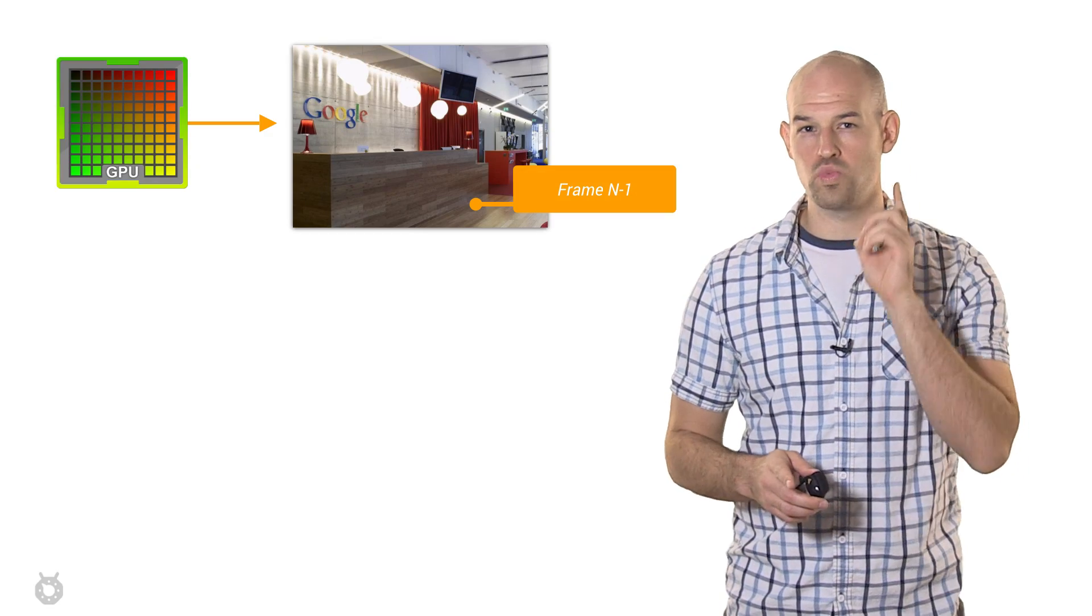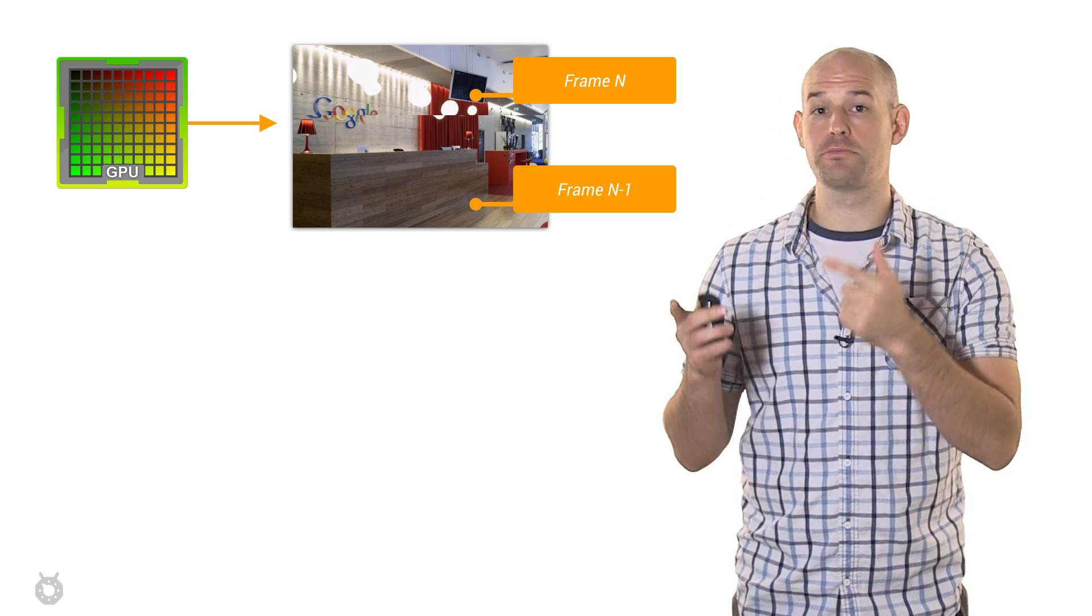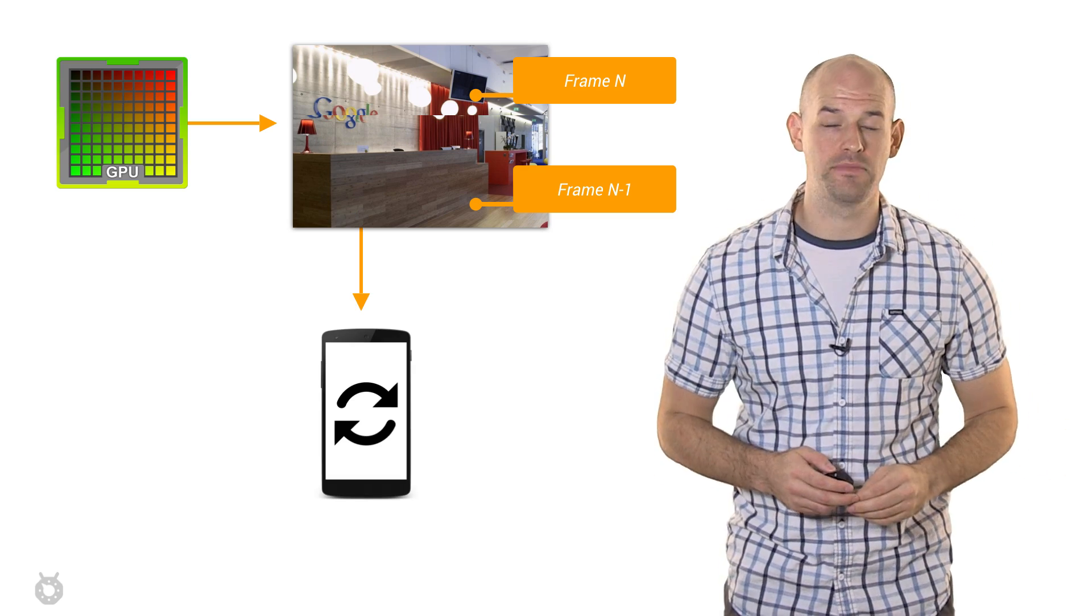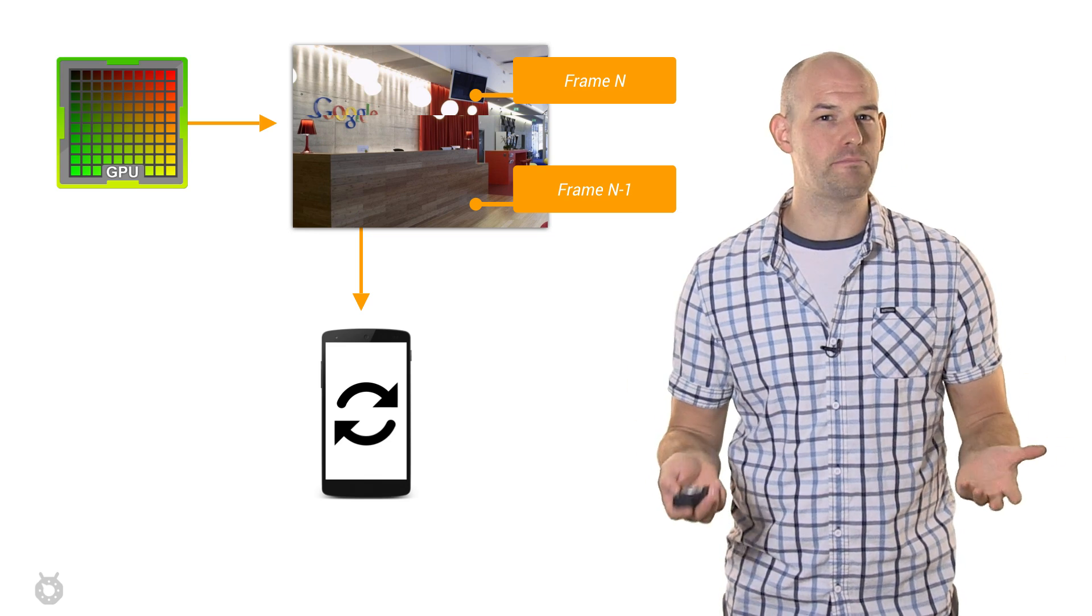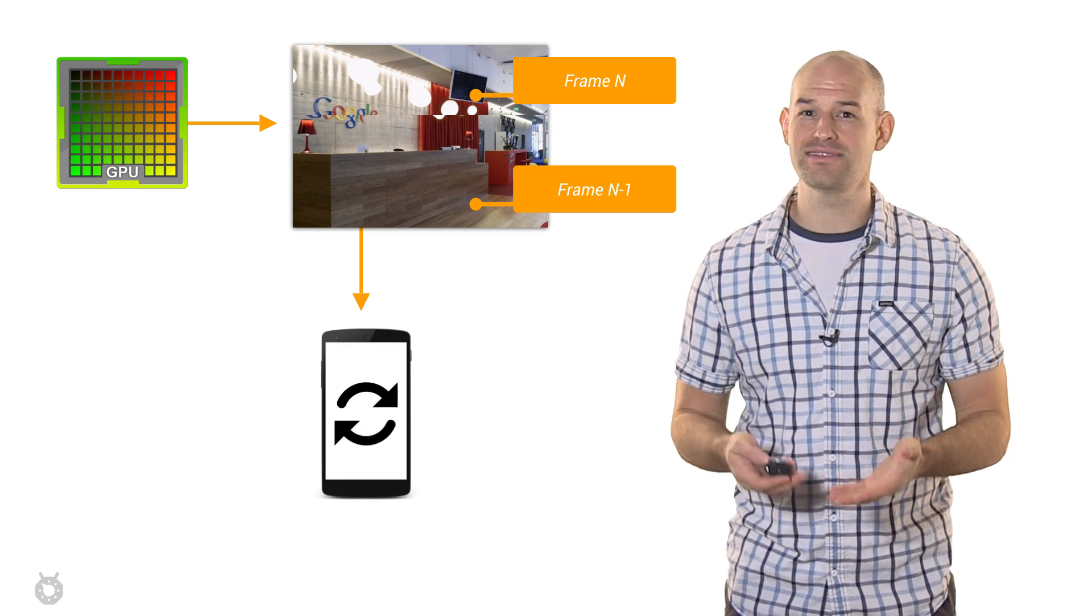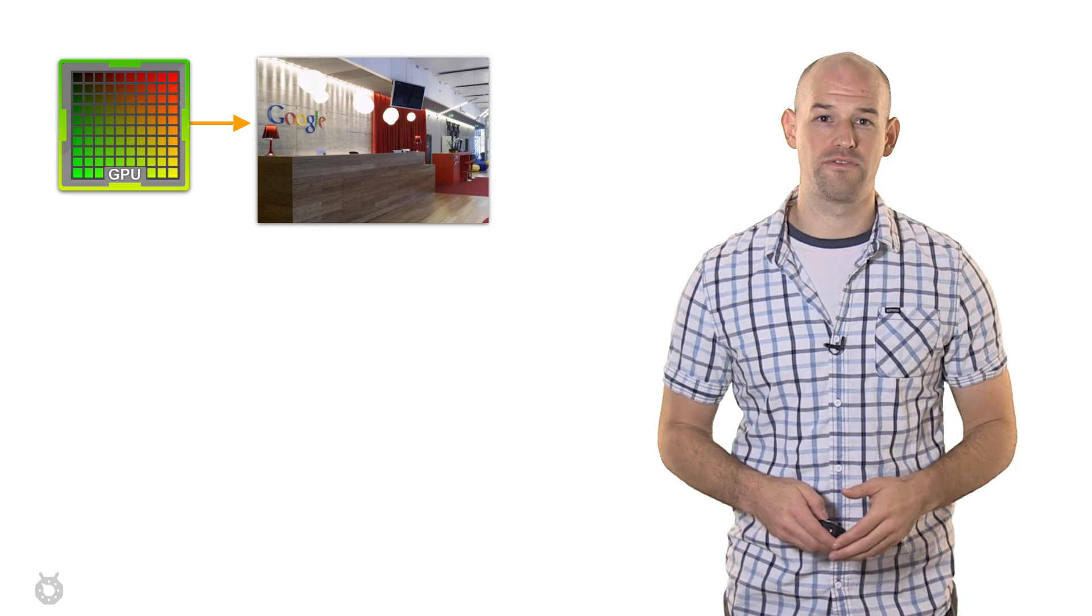The issue is that your graphics card uses one region of memory to draw its frames into. Each new frame will overwrite the previous frame, outputting data one line at a time starting at the top. Now, when the screen comes along to refresh, it doesn't know what state that buffer is actually in. As such, you can grab a frame from the GPU that's not entirely finished yet, meaning it's got half of the previous frame and half of the current frame.